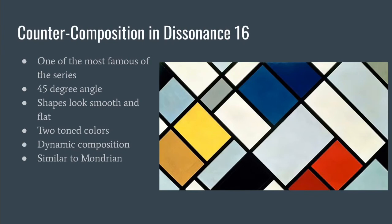This piece is called Counter Composition in Dissonance 16, one of Theo van Doesburg's most famous paintings in the Counter Composition series. The piece consists of rectangles and squares all tilted at 45-degree angles and outlined in an even black line. The angle the shapes are tilted is relevant to the canvas and they look smooth and flat. Theo uses the primary color scheme on the majority of his paintings, and this one is no exception — it features two tones of red, two tones of blue, and two tones of yellow placed next to each other, adding dynamism. By tilting the shapes, he also creates a dynamic composition, as angled objects or objects touching the canvas edges are thought to be more dynamic.